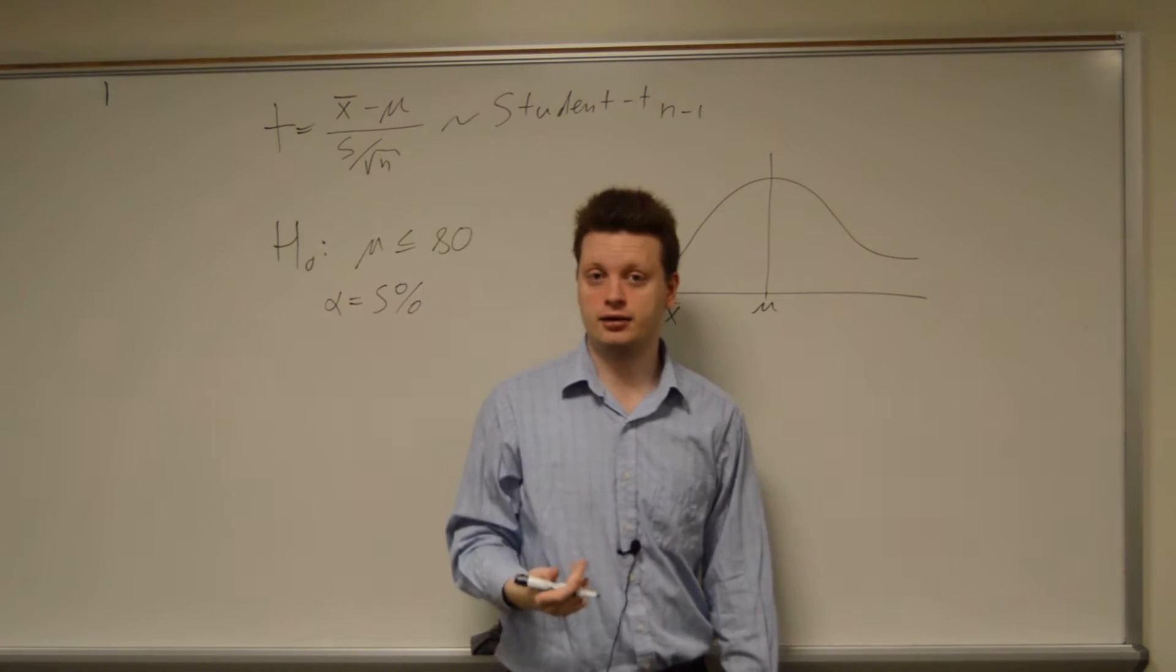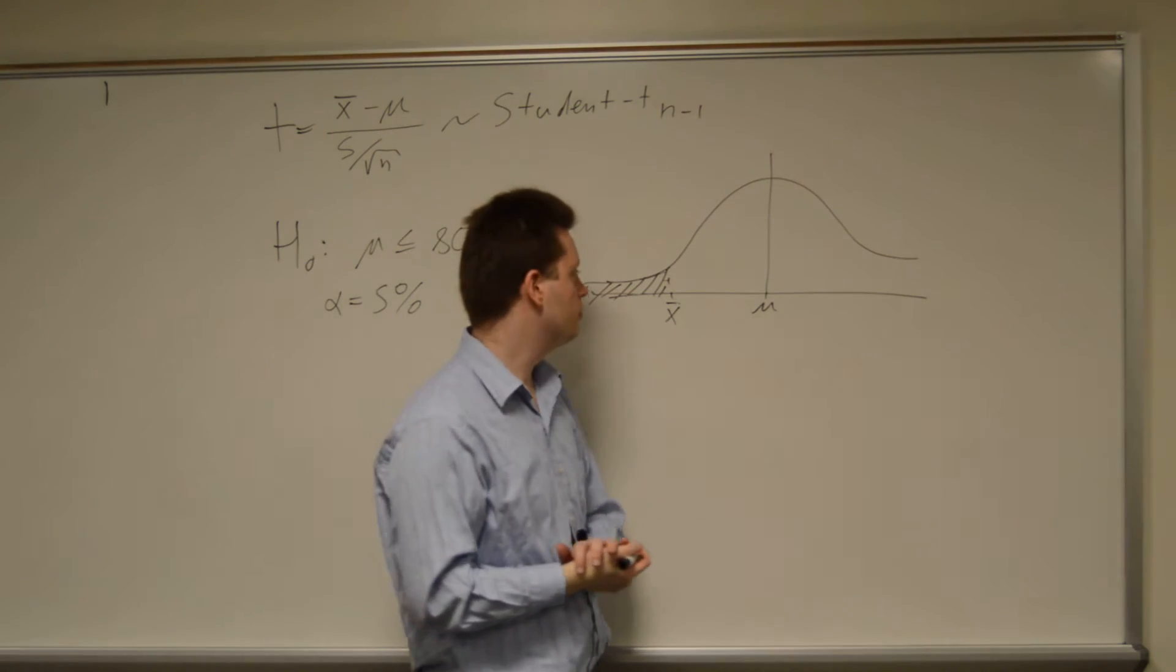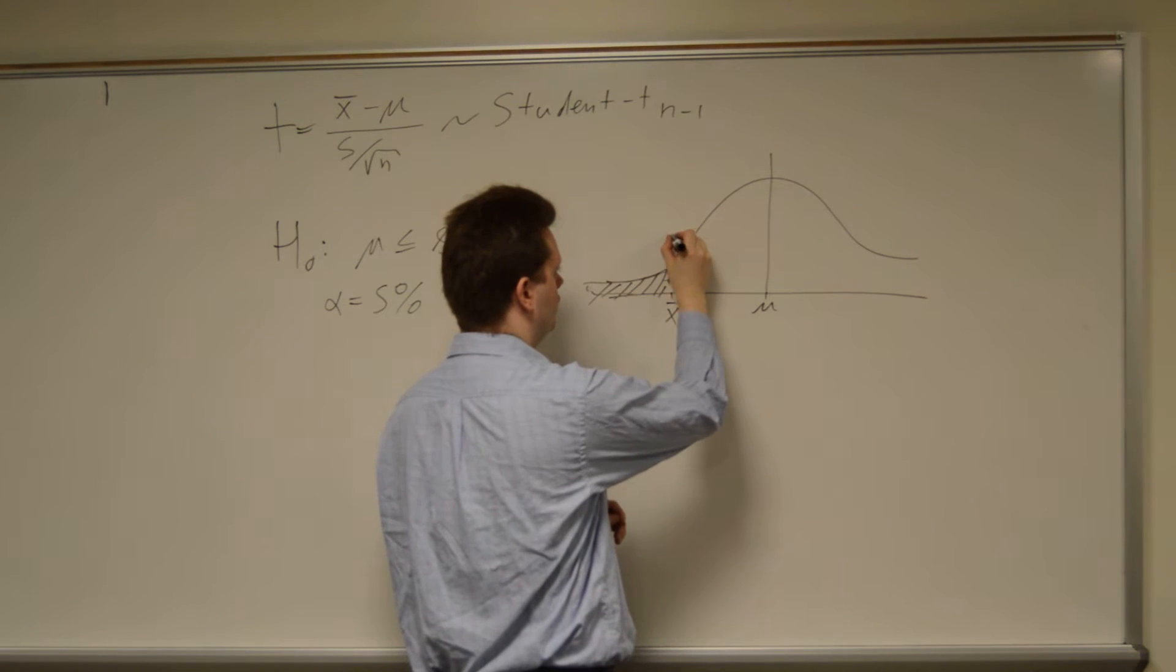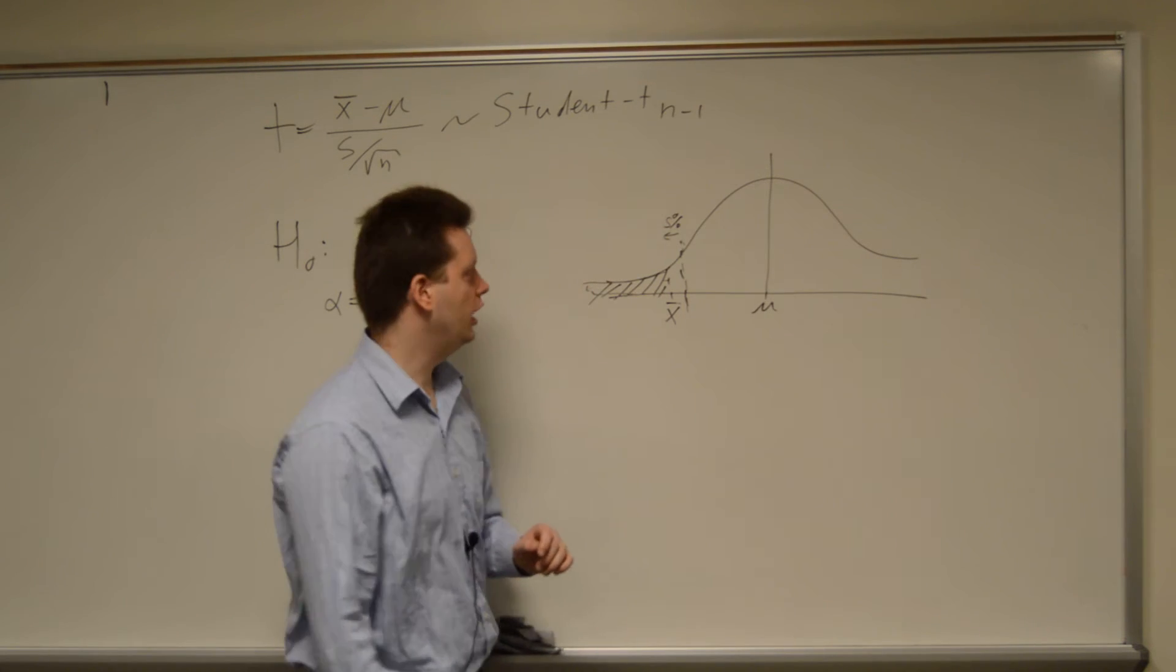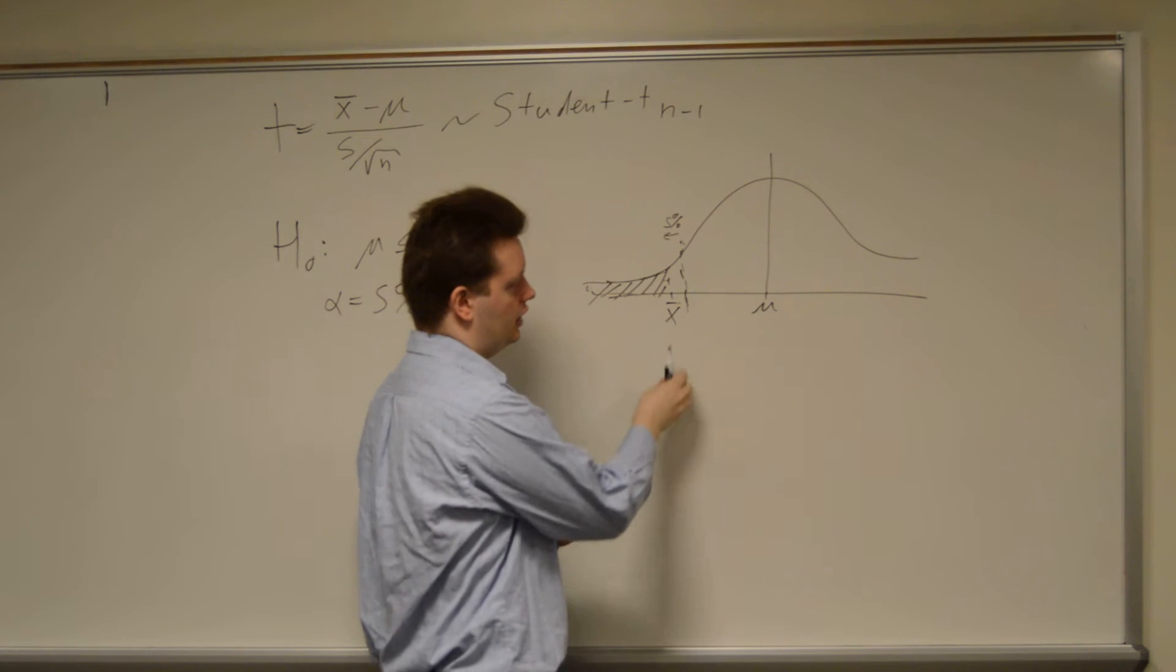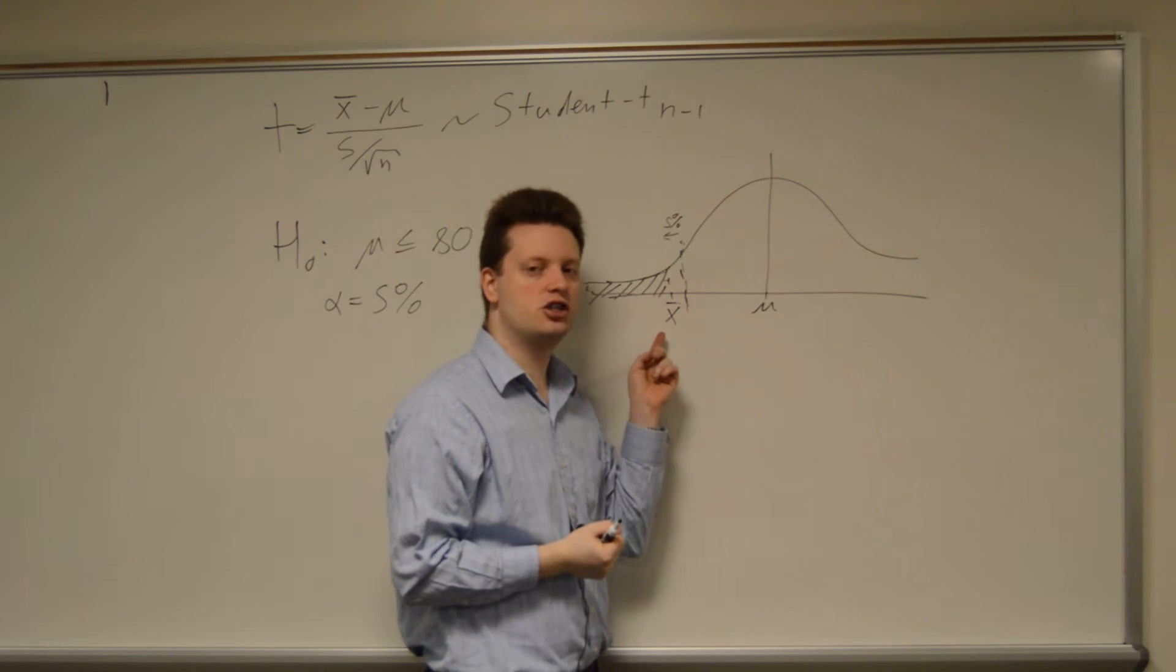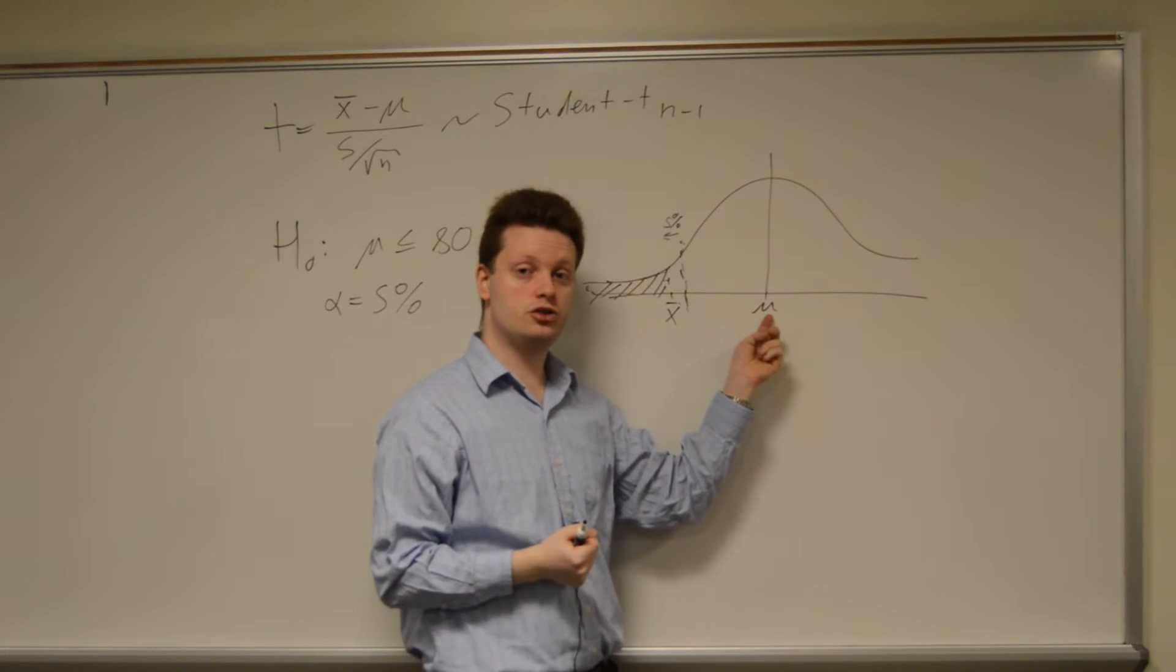A common threshold people take is 5%, so alpha equals 5%. What does that mean? Well, that means if I look here, I estimated my x bar, and I will see that the area to the left of this dashed line is 5%. So if the area under the curve to the left of this line is 5%, and my x bar is within that 5% threshold, that means I have a probability of less than 5% to actually measure this x bar if mu is the true mean.